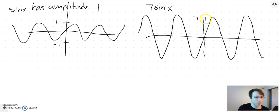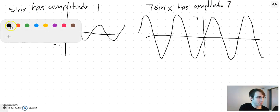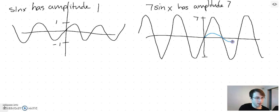So 7sin(x) has amplitude 7, and just for reference maybe we'll draw in sin(x) here. That's 1, and then it can be negative 1.